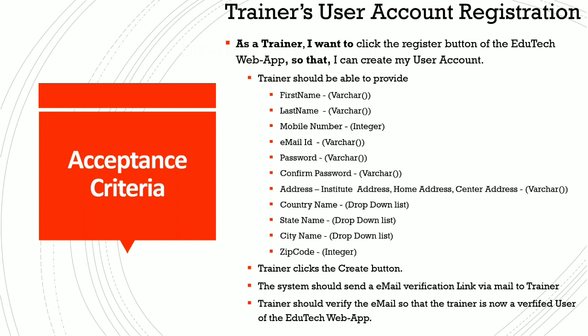The acceptance criteria for the trainer to register his account is: the trainer should be able to provide the first name, last name, mobile number, email ID, password, confirm password, address, country name, state name, city name, and zip code. All this information needs to be documented by the business analyst, which he elicits from the customer team or the strategy team.